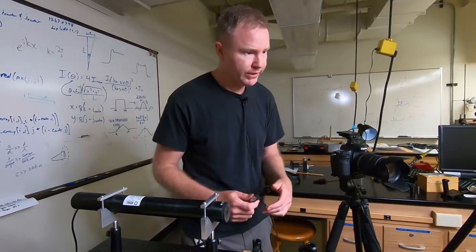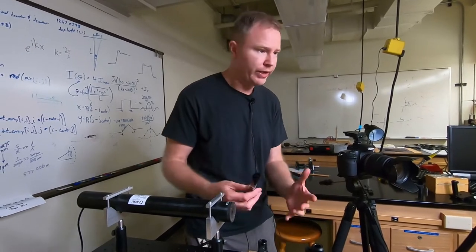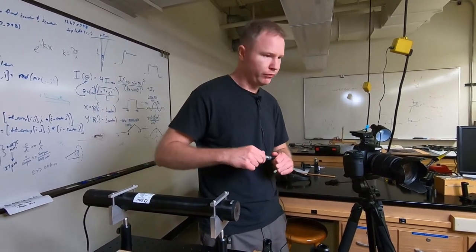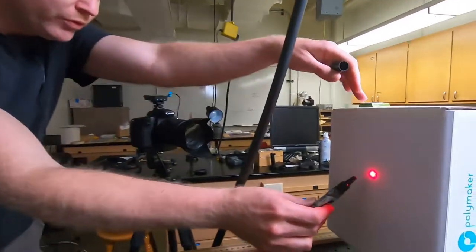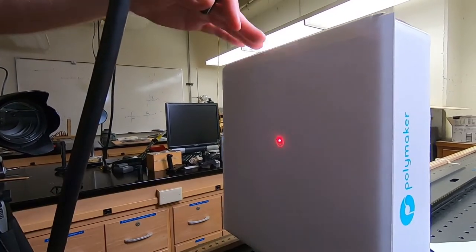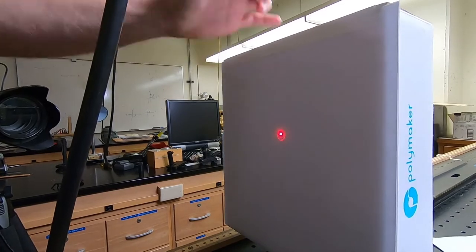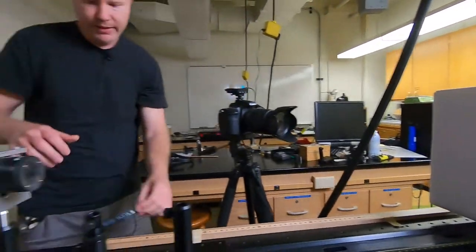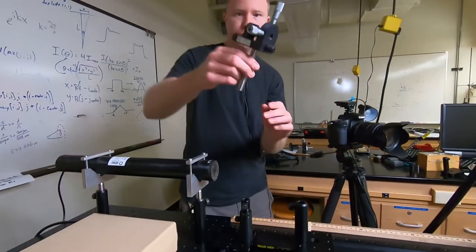One of the important things is I want, after I've filtered it, I want the beam to go roughly in the same direction. So the first thing I'm going to do is I'm going to mark where the laser goes right now just to give myself something to shoot for, and now I'm going to install the spatial filter.